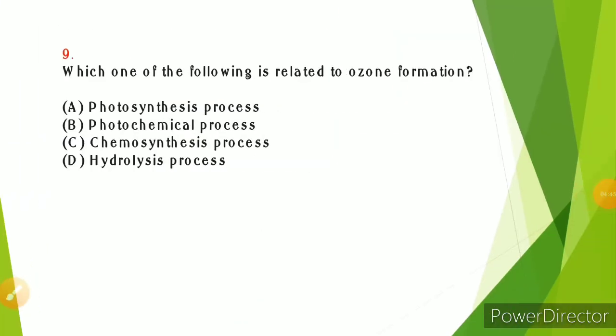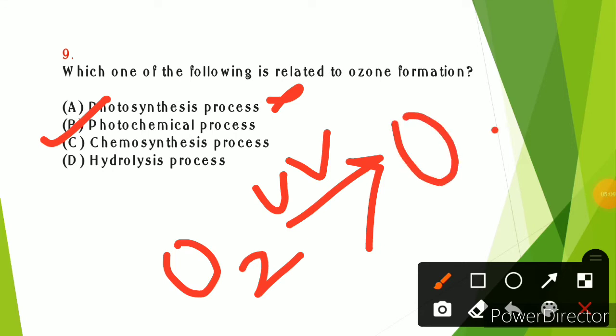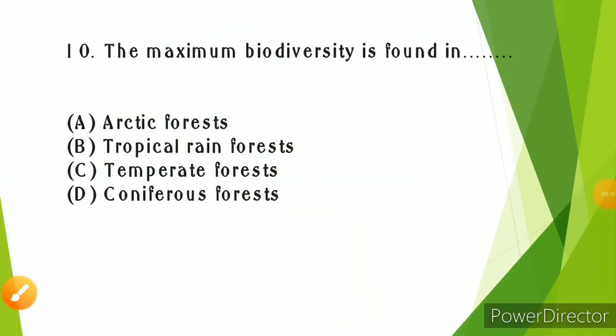Which one of the following is related to ozone formation? Ozone formation is related to the photochemical process. This is the correct answer because ozone formation happens when sun and UV radiation help convert molecular oxygen through photochemical process.